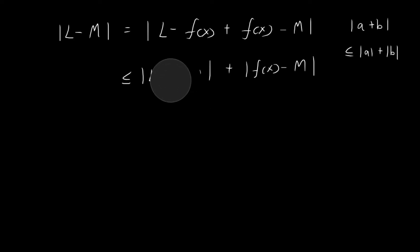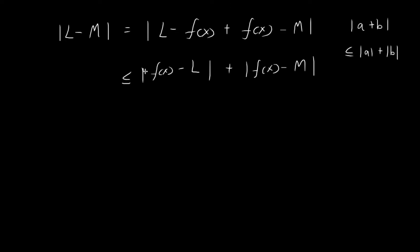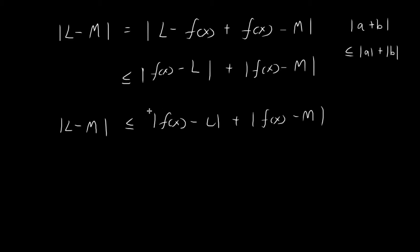Instead of f of x minus L, I can rewrite this as f of x minus L. Both of these terms are completely identical to the terms inside the epsilon-delta definition. I know that I can make these two terms arbitrarily small as long as x is sufficiently close to C. So if I restrict x to be sufficiently close to C, I can make these two terms arbitrarily small, which means this entire term can be made arbitrarily small.